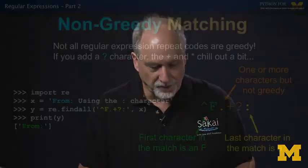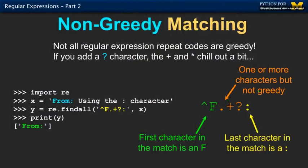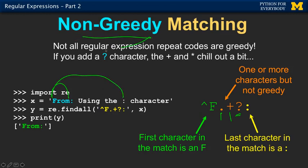You can fix greedy behavior with another character. Add a question mark after the plus or asterisk to make it a three-character sequence. This says any character, one or more times, but don't be greedy. Now it looks at the options and since it is not greedy, it prefers the shortest match. Greedy prefers the longest; not greedy prefers the shortest.